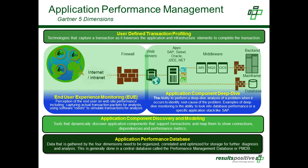When talking about application performance management, we're addressing the five key dimensions as defined by Gartner. The first is end-user experience monitoring, which incorporates real user and synthetic transaction monitoring. We then go into application component discovery, performing auto-discovery and dynamic modeling capabilities.